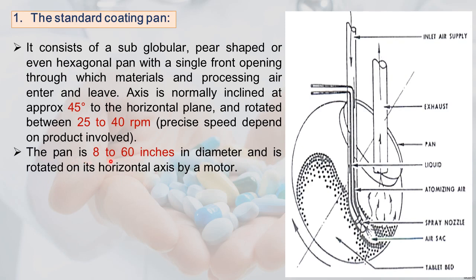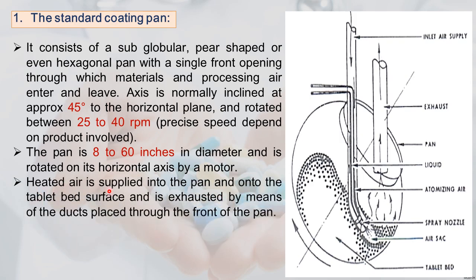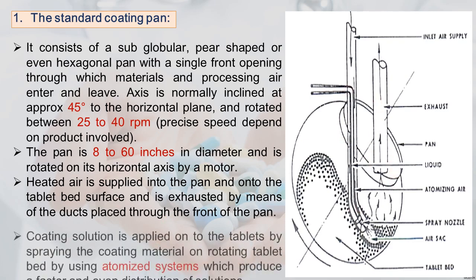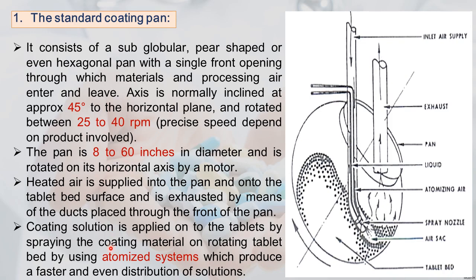The pan is 8 to 16 inches in diameter and rotated on its horizontal axis by a motor. Heated air is supplied into the pan onto the tablet bed surface and is exhausted via ducts placed in front of the pan. The inlet supplies heated air while the exhaust removes it.